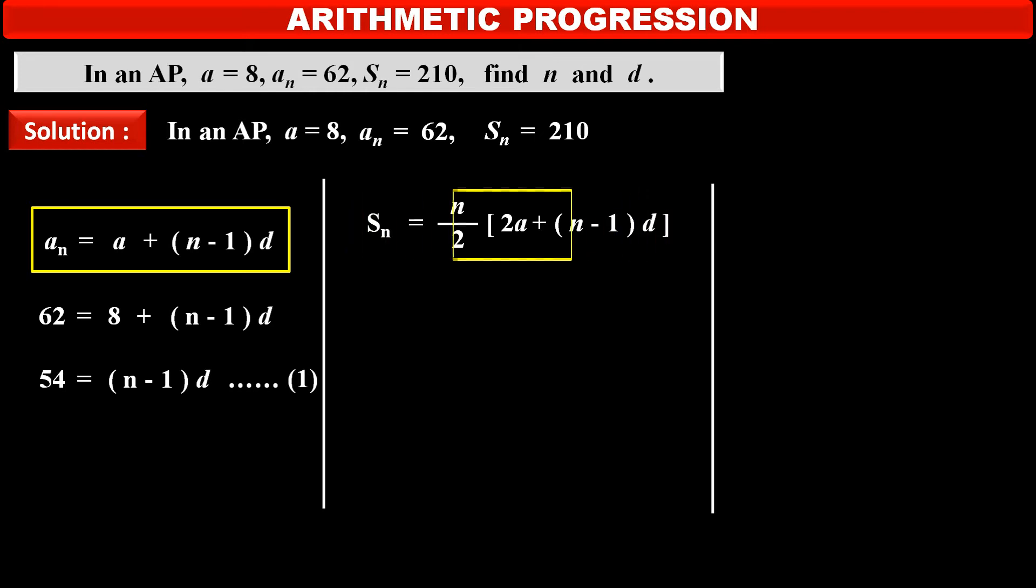So, substituting the given values, we get value of SN that is 210 is equal to N upon 2 into in bracket 2A plus N minus 1 into D.